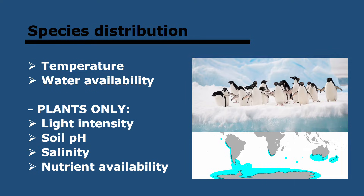For plants, geographic distributions are determined by temperature, water availability, light intensity, soil pH, salinity, and the availability of nutrients. A plant cannot live outside its range of tolerance for these factors. For animals, it's only temperature and water availability that apply. Even for humans, we have a range of temperature we can tolerate, and outside that we cannot live. For example, penguins have a range of tolerance that means they can only live in certain areas of the planet.